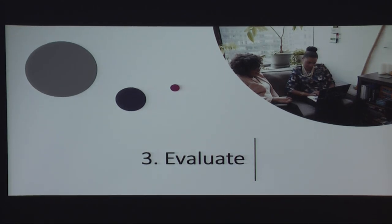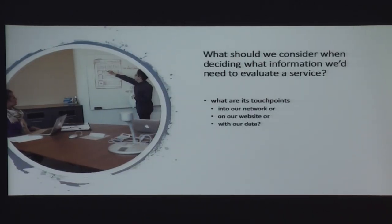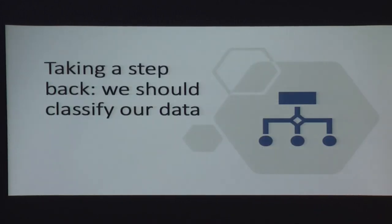Now we're going to analyze all the information we gathered, assuming we got back most of what we needed from the vendor — they filled out our questionnaire and gave us a SOC 2 Type 2. What are we going to consider? If you've never done this before, you might be wondering how to evaluate what you've received. One of the first things we focus on is: what sort of trust do we actually need in them? What are their touch points into our network? Do they run on our website? This is where we take a step back and think about classifying our data.